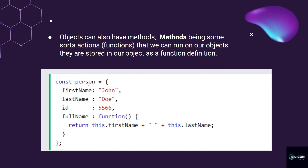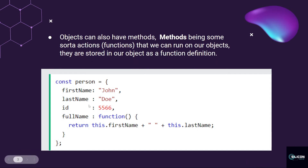We have a const Person object. Objects can also have methods — methods being some sort of actions or functions that we can run on our objects. They are stored in our object as a function definition. For example, you can add a fullName function. That function is called a method — it's a function or action the object can perform. This dot first name plus a space plus this dot last name will return the full name. So if you do console.log(person.fullName), it's going to show something like John Doe.